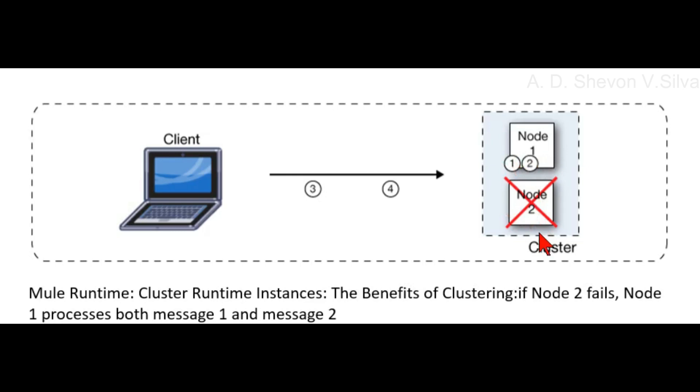Node 1 processes both message 1 and message 2 when Node 2 fails. The client is connected to the cluster, and Node 1 is processing the messages while Node 2 has failed.